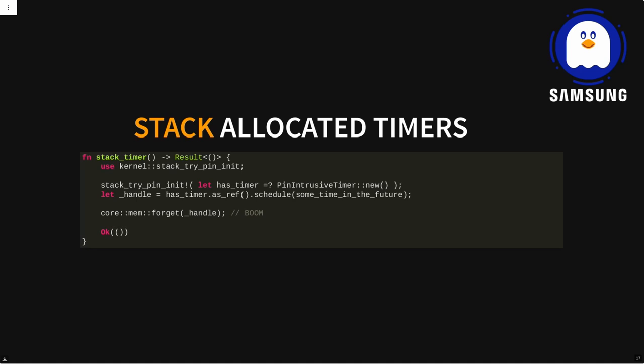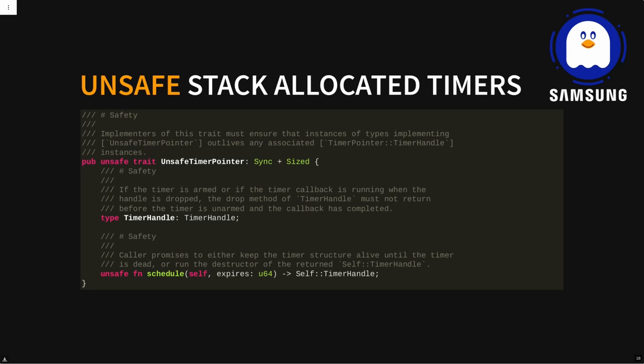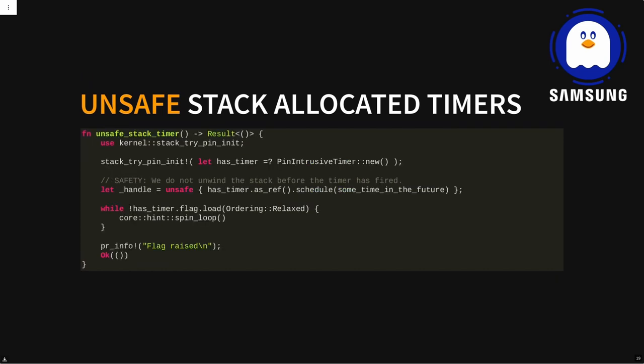In the Rust standard library there's something called scoped threads — when you spin up a thread that takes references to the calling stack, you have the same problem: the stack can go away and another thread would point to something gone. We can do the same thing for our timers. First, we can make the timer pointer trait unsafe and put a safety requirement that if you use this unsafe timer pointer, you have to make sure the thing you point to doesn't go away. We can put a safety comment and use an unsafe block promising the stack won't go away before the timer fires — this is sound, but obviously prone to errors.